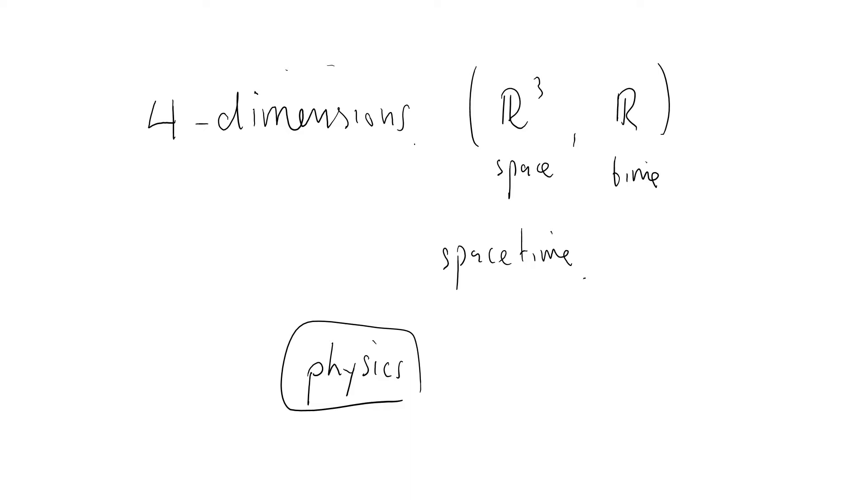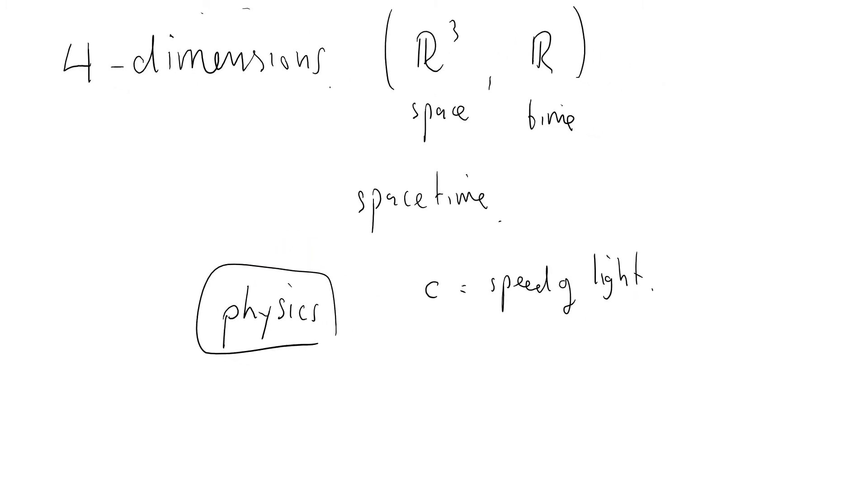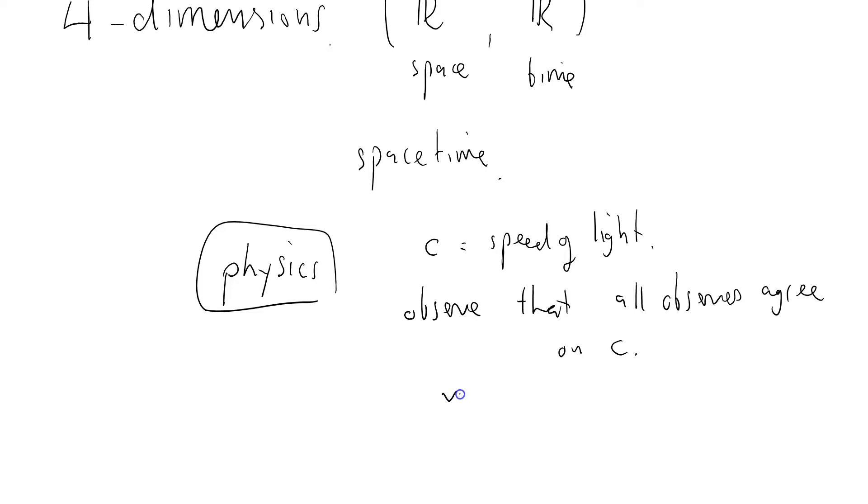In particular, in physics there's this thing called c which equals the speed of light, and I'm going to make the observation that all observers agree on c.